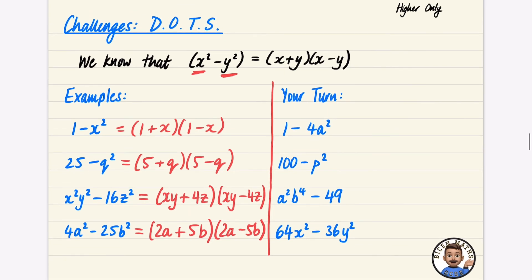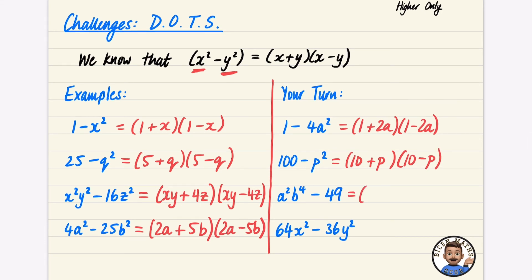Here are the answers: 1 minus 4a squared — the square root of 1 is 1 and the square root of 4a squared is 2a, giving (1+2a)(1−2a). For 100 minus p squared, the square root of 100 is 10 and the square root of p squared is p, giving (10+p)(10−p). For a squared b to the 4 minus 49: the square root of a squared b to the 4 is ab squared, and the square root of 49 is 7, giving (ab²+7)(ab²−7).